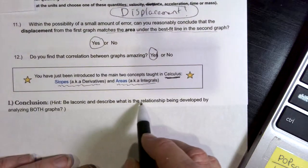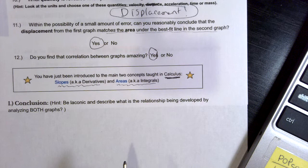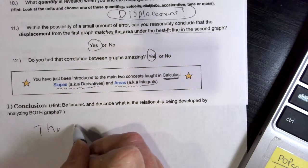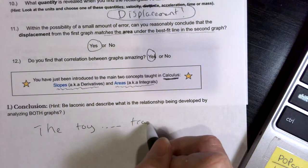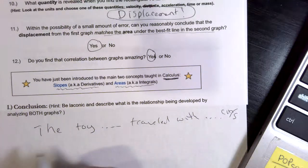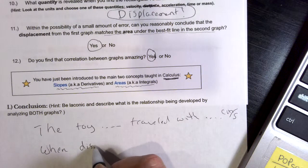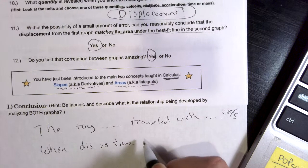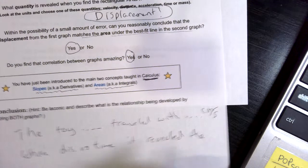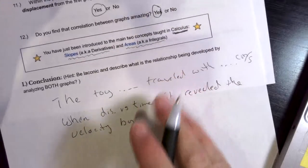Alright, now, be laconic. Describe the relationship being developed between analyzing both graphs. So, your conclusion is you usually go back and read the objectives of the lab. I can analyze the motion of the vehicle. So, you can say the toy train traveled with blah blah blah centimeters per second. Don't forget that.